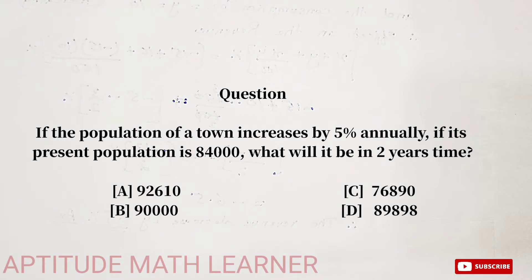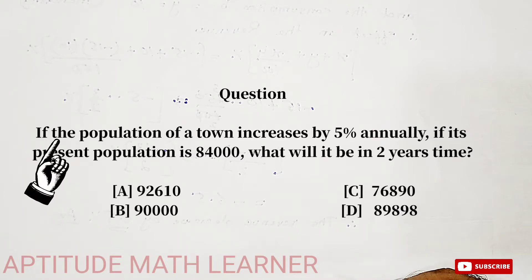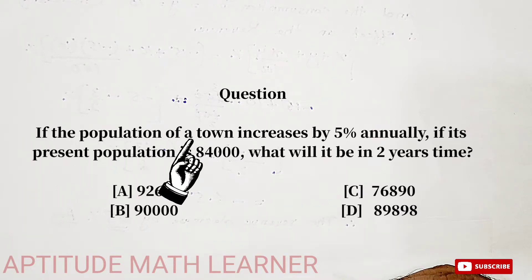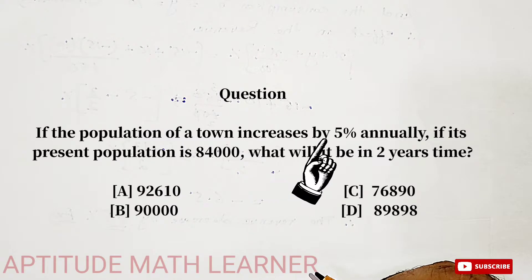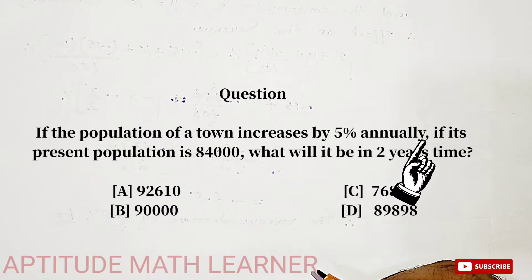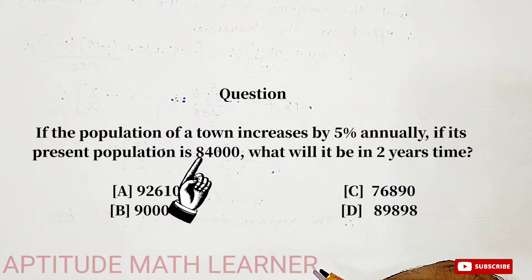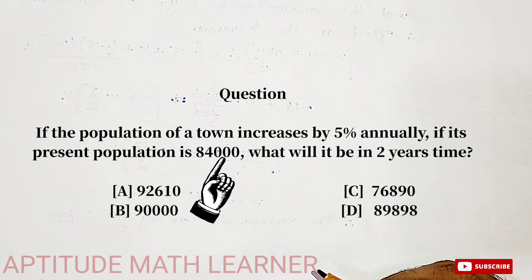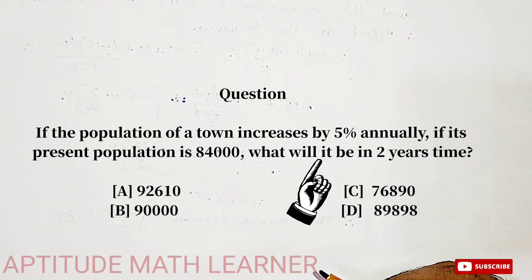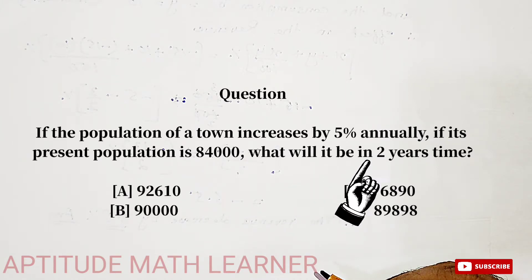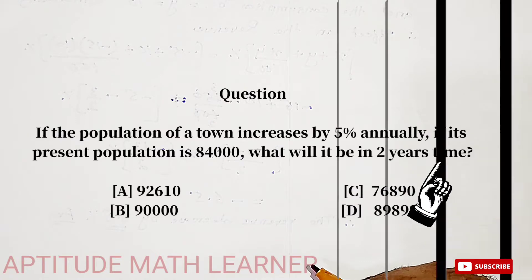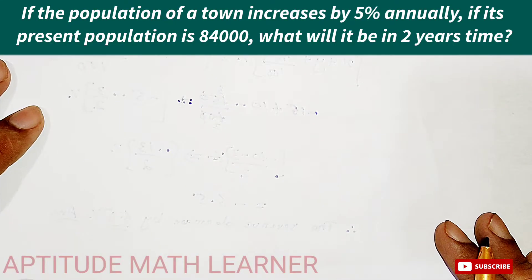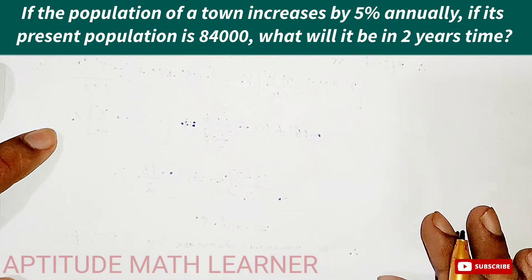Welcome to my YouTube channel Aptitude Math Learner. Today's question is: the population of a town increases by five percent annually. If the present population is 84,000, what will it be in two years' time? So after two years, what will be the population?